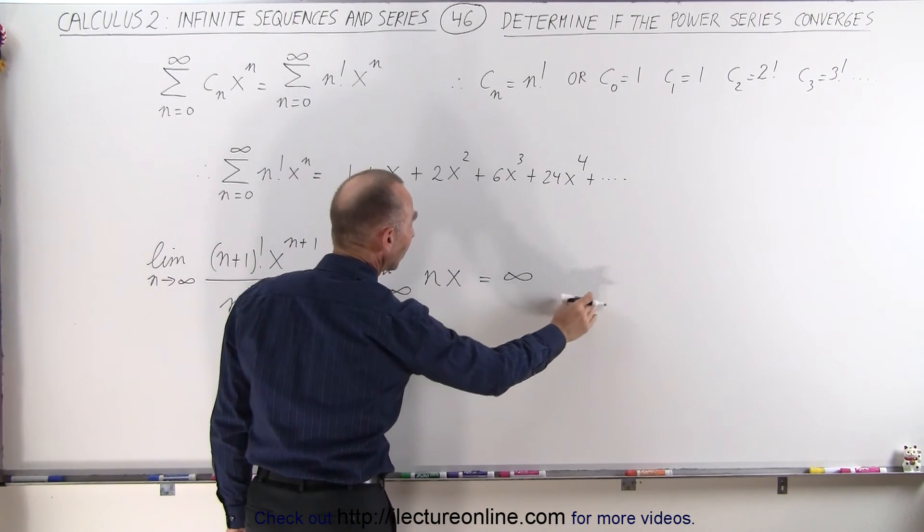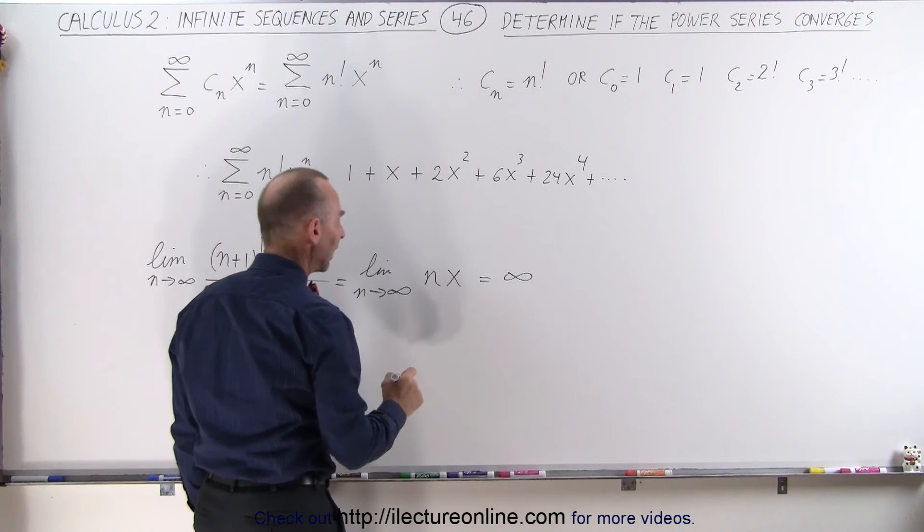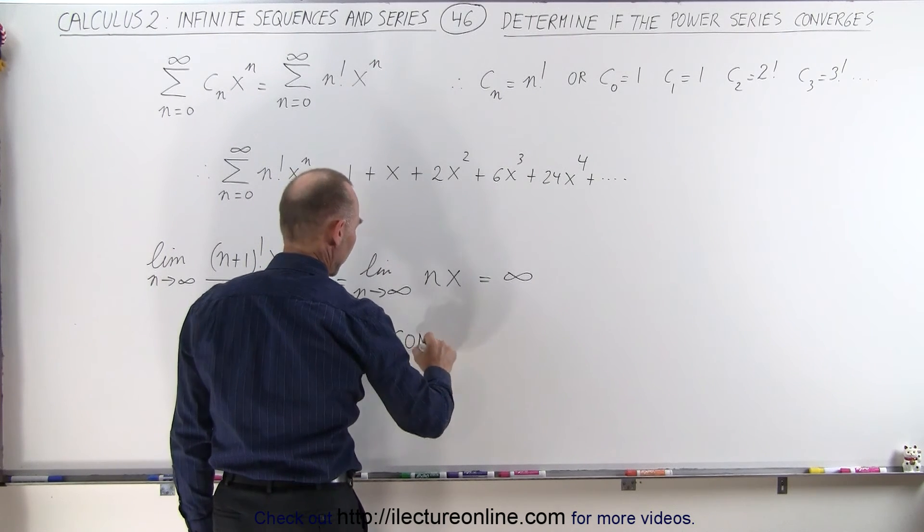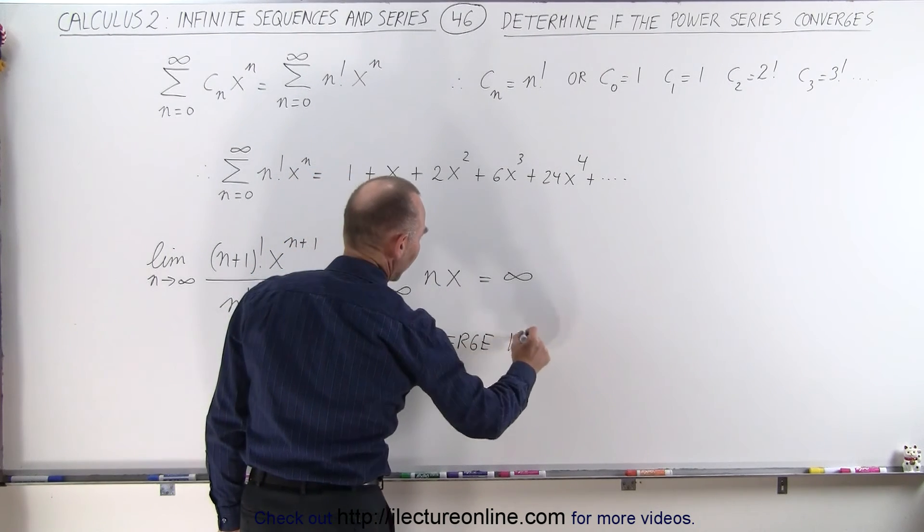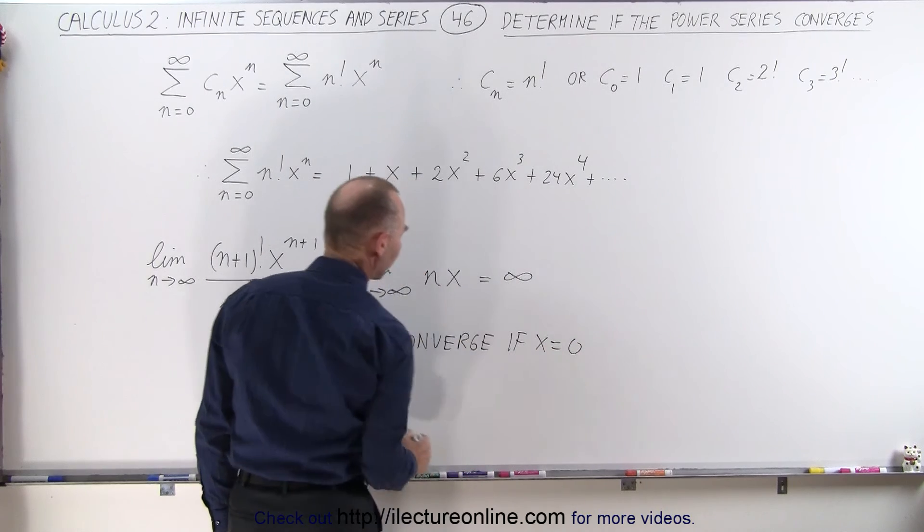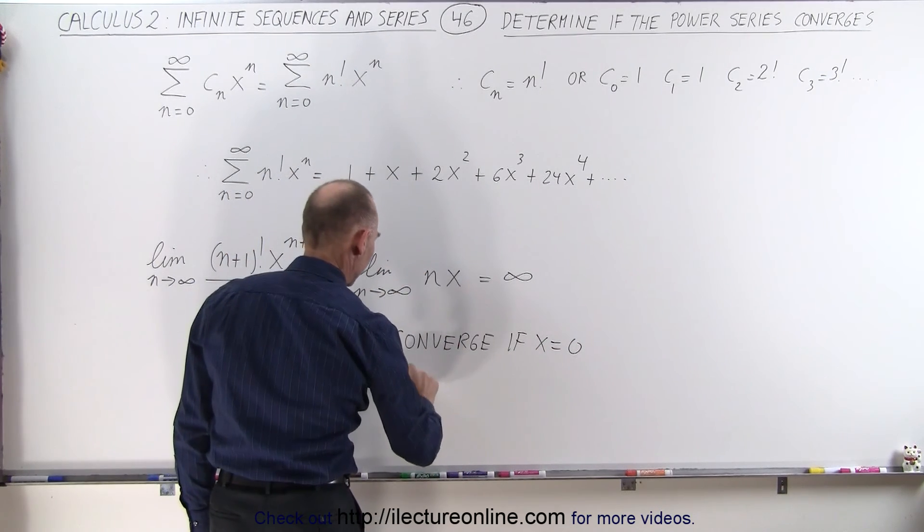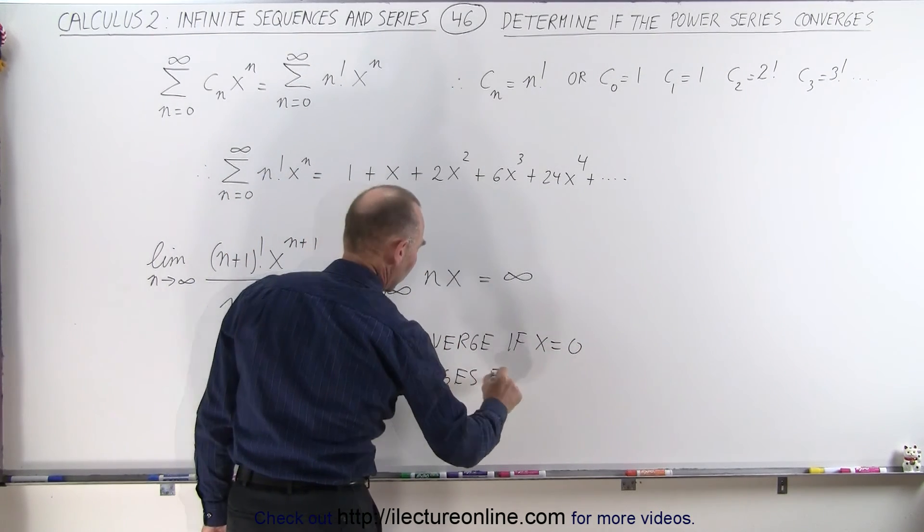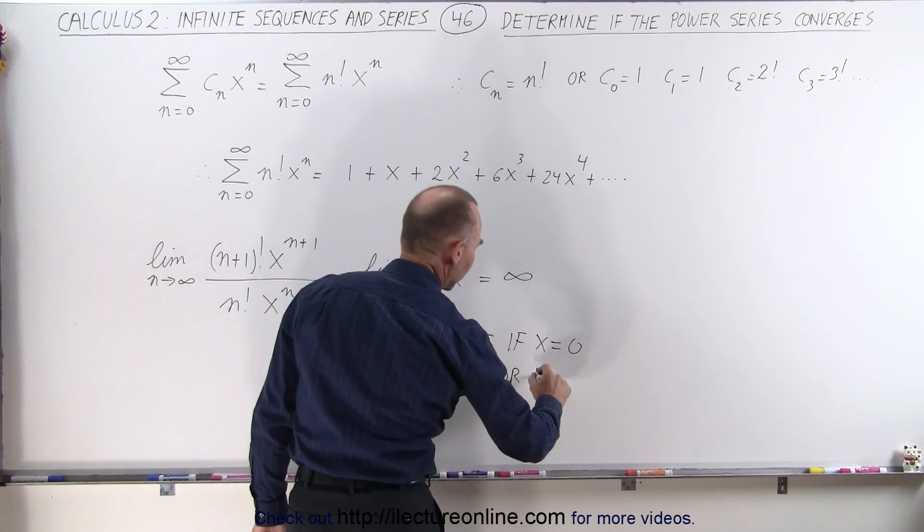Every term that we add will be 0, so we know that it will converge if x equals 0, but for all other values, it diverges for all other values of x.